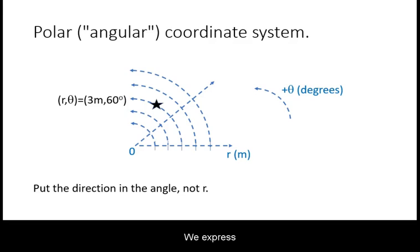We express a position in this coordinate system as the radial distance and the angle relative to our reference direction. The angle may be positive or negative depending how we declared the reference angular direction.